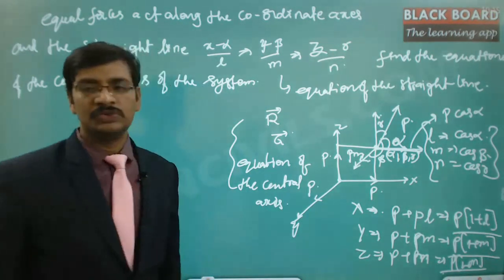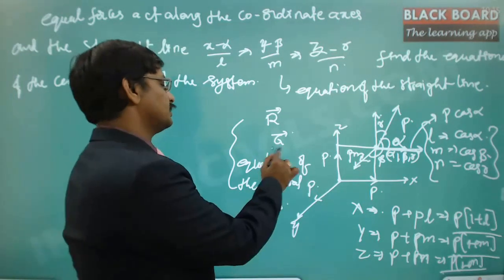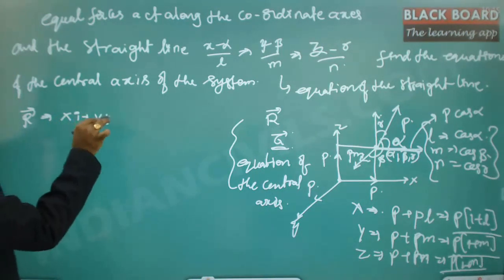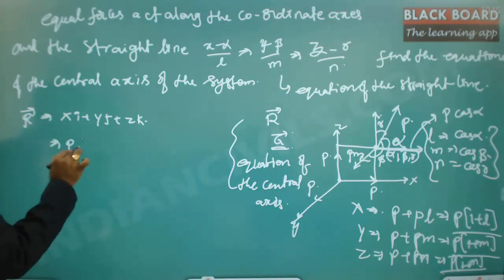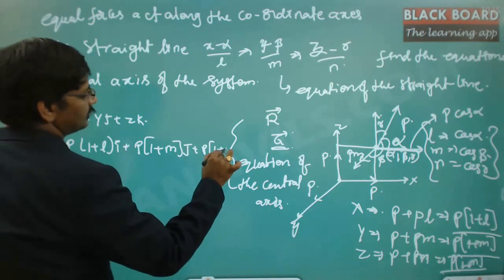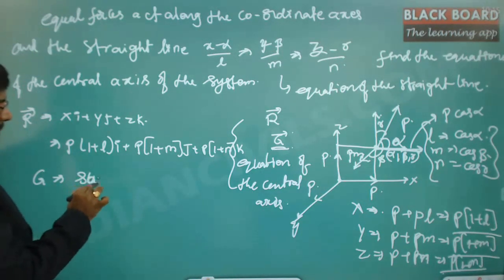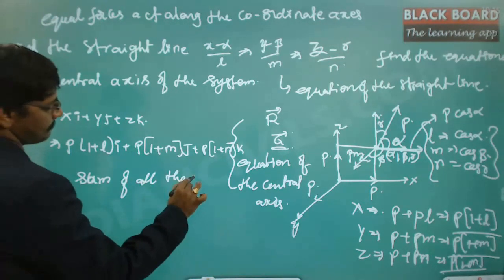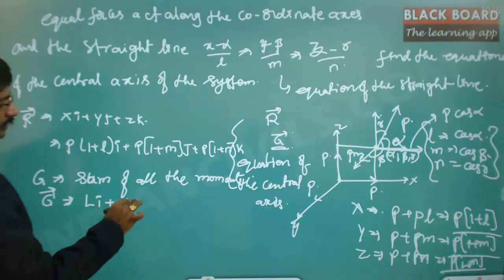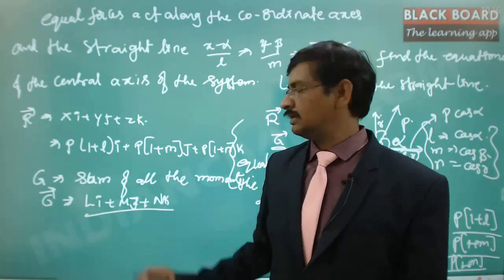These are the three force components — the resultant of all forces in the directions of X, Y, and Z. The resultant R is expressed as: R = P(1+L)·i + P(1+M)·j + P(1+N)·k. Now to find the G value, which is the sum of all couples and moments, G is expressed as L·i + M·j + N·k. We can find the individual components L, M, N of this resultant moment.